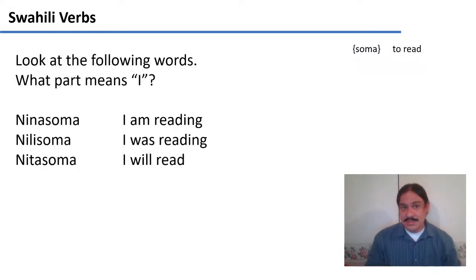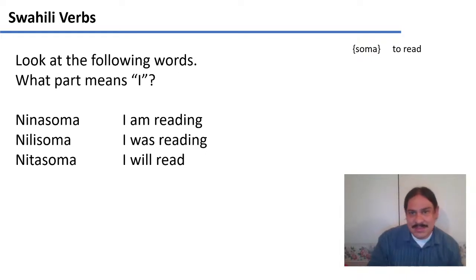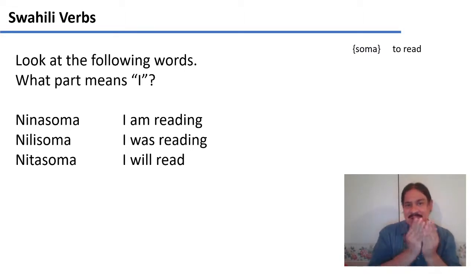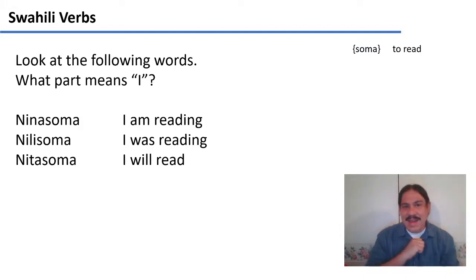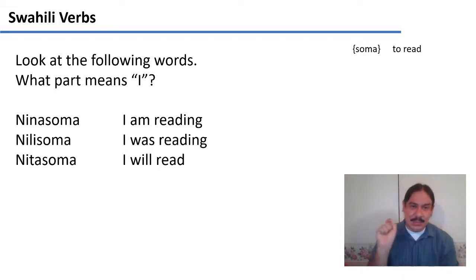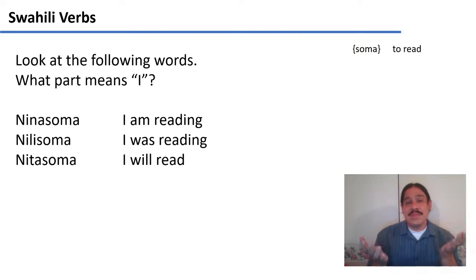So we know soma, and then we get these words: nina soma, nili soma, nita soma — meaning I am reading, I was reading, and I will read. Obviously all three of them have soma as an element in common, same as in English we have read on the right. I want you to look at those words and try to figure out what part of the Swahili words means I, because all of the English translations have I am reading, I was reading, I will read. Please pause the video.